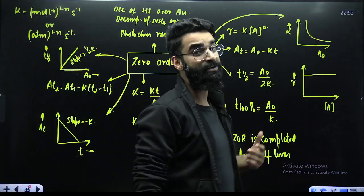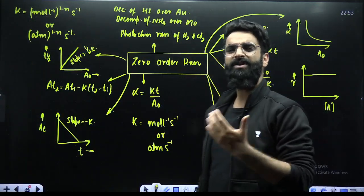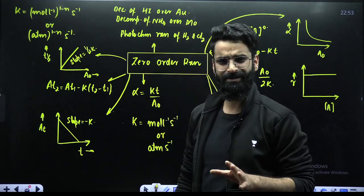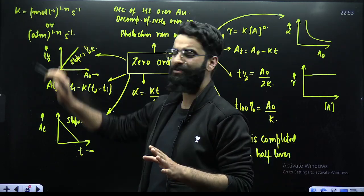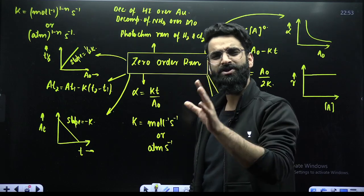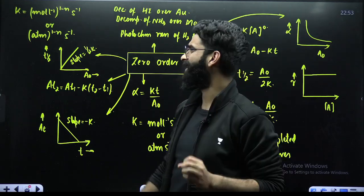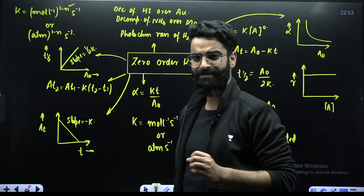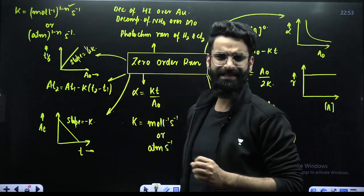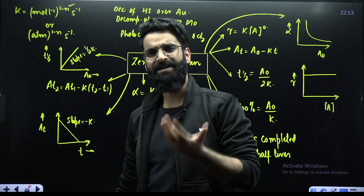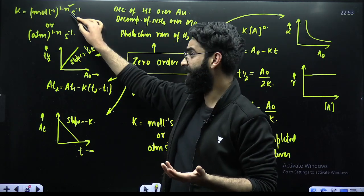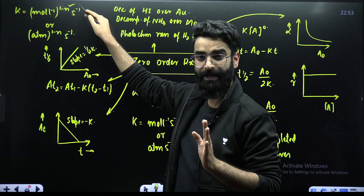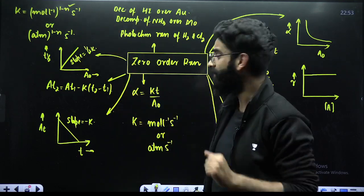The units of rate constant depend on the order of the reaction. In general, units of rate constant are: moles liter inverse, whole raised to power (1 minus n), and second inverse, where n is the order of the reaction. Alternatively, atm raised to power (1 minus n), second inverse. For a zero-order reaction n equals 0, for first-order n equals 1, and so on — you can substitute n to get the units accordingly.